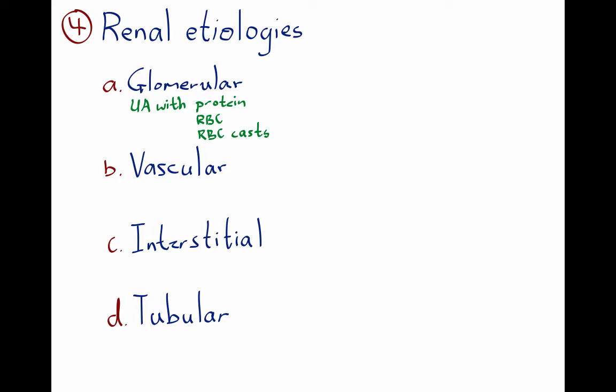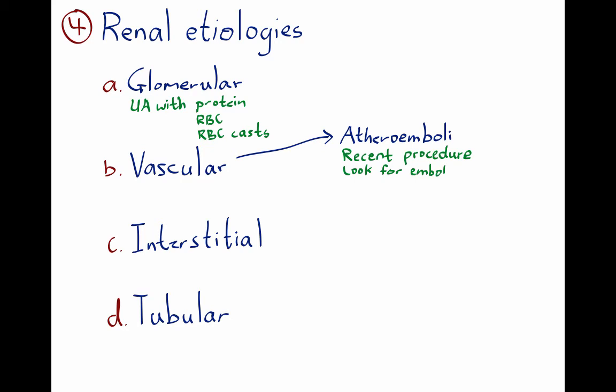There are two etiologies involving the vascular compartment. The first is atheroembolism, which typically happens after a left heart catheterization or other vascular procedures involving the large arteries. You may see evidence of emboli elsewhere, or the patient may manifest a systemic vasculitic-type syndrome. Without evidence of emboli elsewhere, it's almost impossible to make this diagnosis.